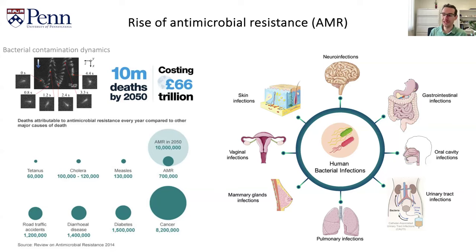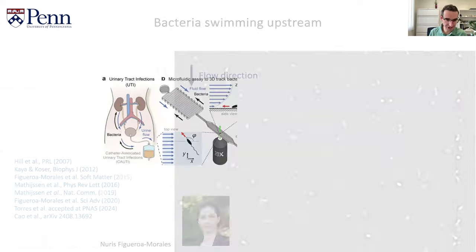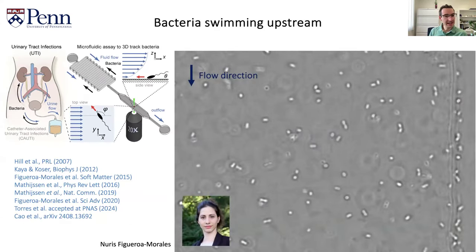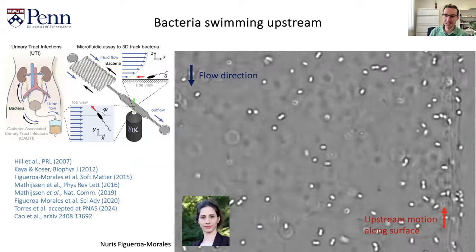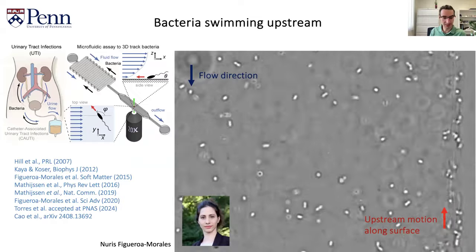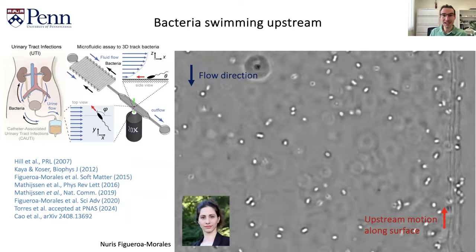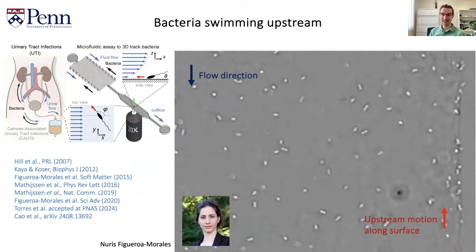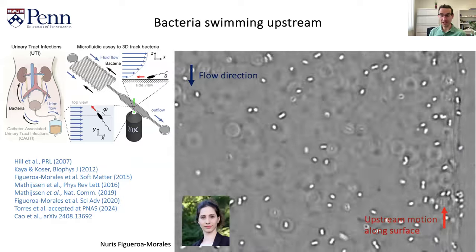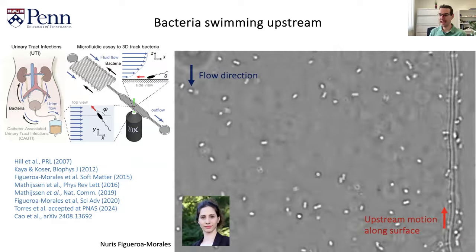One of these types of infections that I'm particularly interested in at the moment is urinary tract infections. And in urinary tract infections, a problem that you have with bacteria is that they have this remarkable ability to swim upstream. Here you can see a video of an experiment that was done by Norris Figueroa Morales. She's a professor now at UC Boulder, and it's an amazing video. This is what really got me interested in this area.